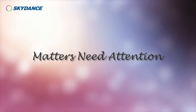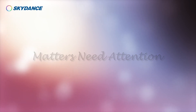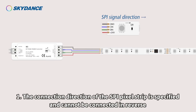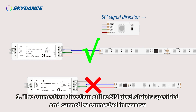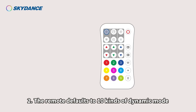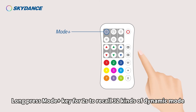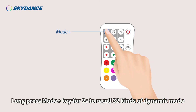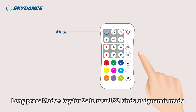Matters needing attention. 1. The connection direction of the SPI pixel strip is specified and cannot be connected in reverse. 2. The remote defaults to 10 kinds of dynamic mode. Long press the mode plus key for 2 seconds to recall all 32 kinds of dynamic mode.